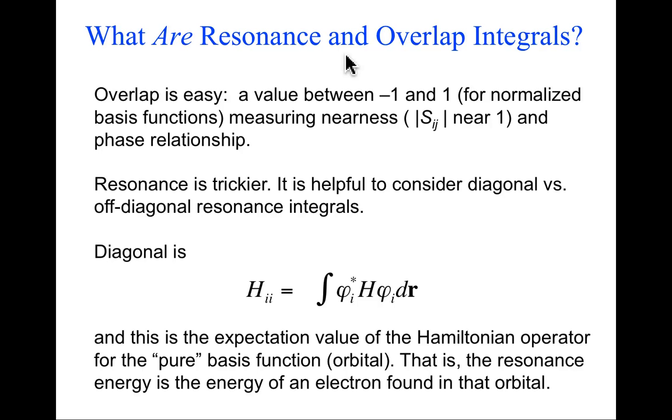An overlap integral takes on a value between negative one and one if my basis functions are normalized. Normalization means when I integrate over all space the product of a basis function with itself—the square modulus if complex, or just the function squared if real—that integral equals one. The value from an overlap integral measures nearness. The closer the absolute value of S is to one, the closer the two basis functions are.